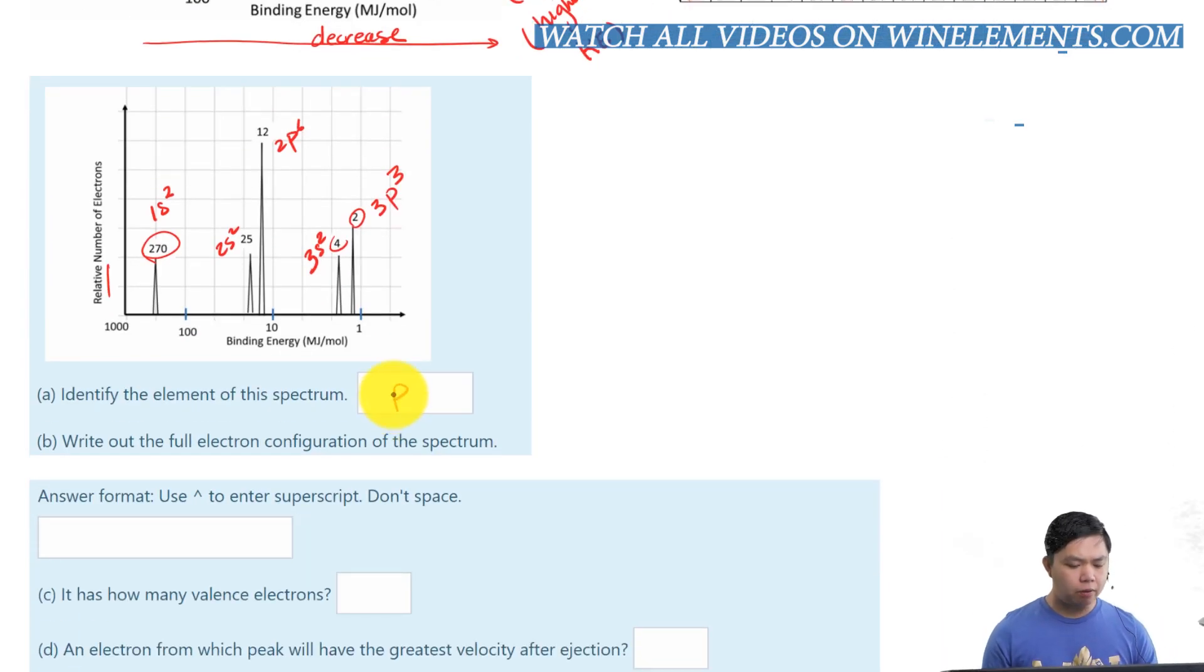And write out the full electron configuration of the spectrum. Well, that's easy. 1s2, 2s2, 2p6, 3s2, and 3p3. If I want to look at the valence electron, these right here are the valence electron. So, keep that in mind. And which one is the closest one to the nucleus?